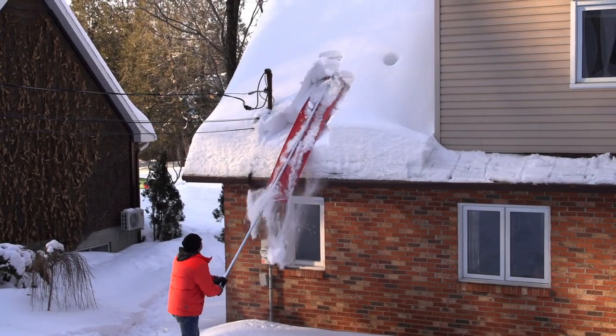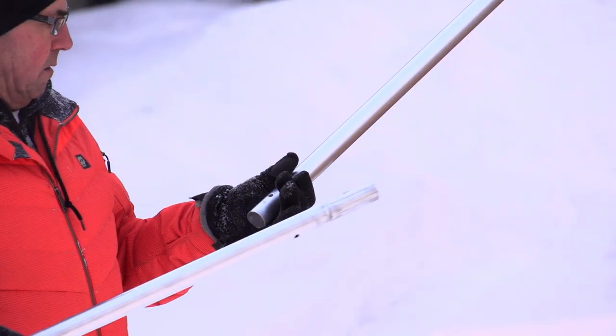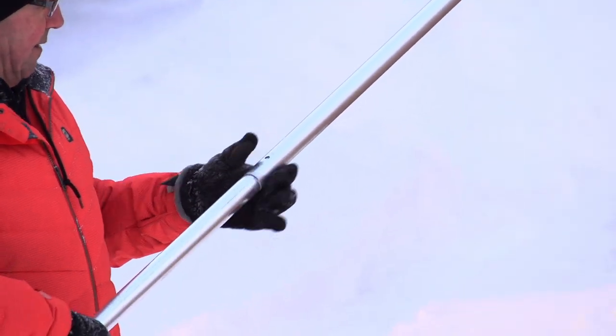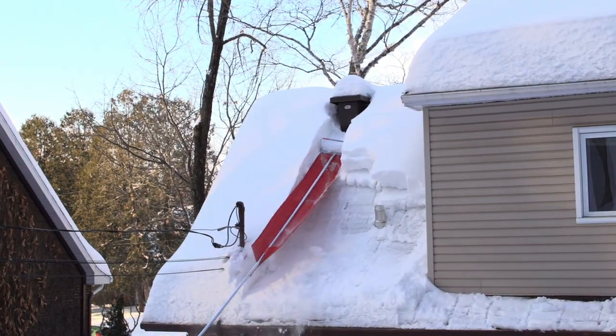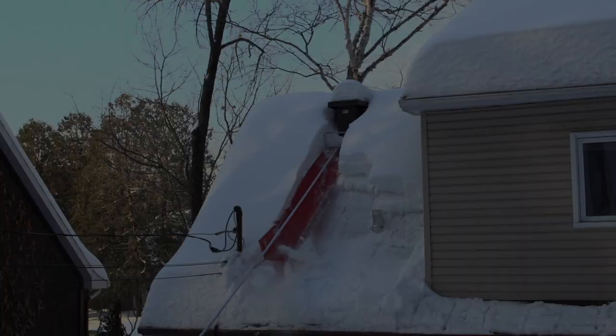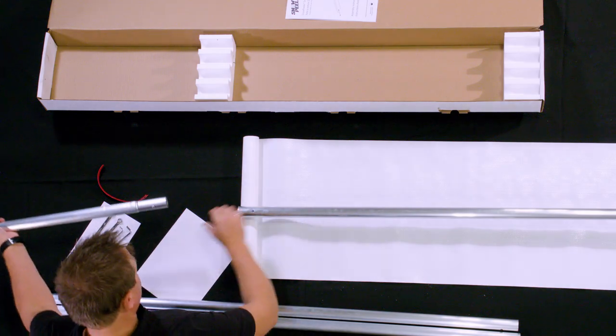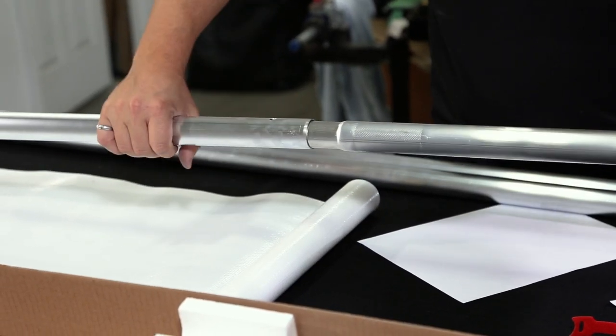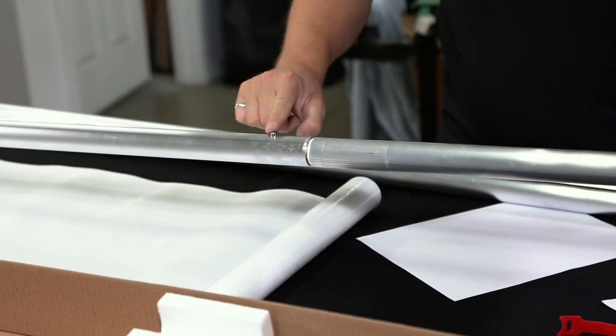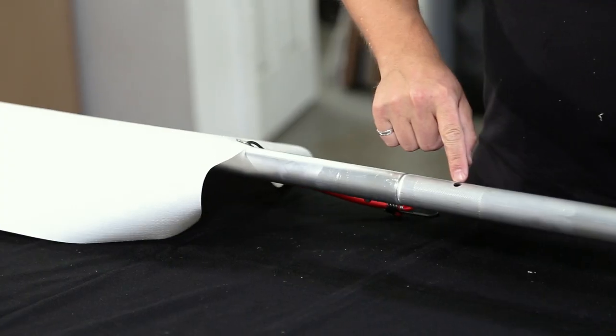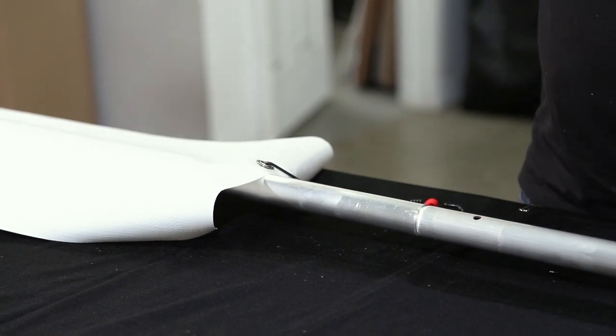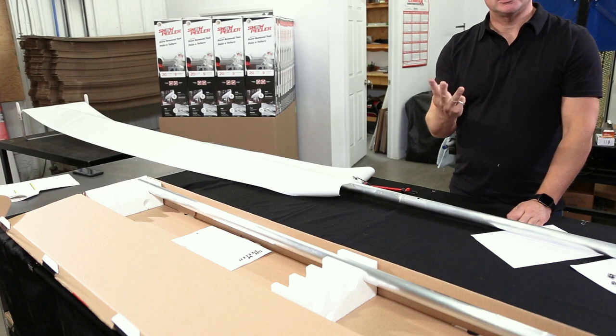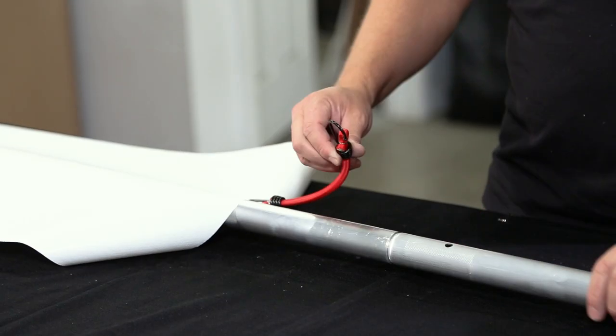When using Snow Peeler, add extension poles only as you need them. Start with the first extension. When you need to extend your reach, add another pole. To add extensions, simply insert the end with the snap button into the wider end of the mounted pole. When you hear the click and the snap button pops through the hole, the pole is properly connected. Note that one of the extension poles has an additional hole on the reverse side. This extension pole is used to attach the elastic strap to the slide.